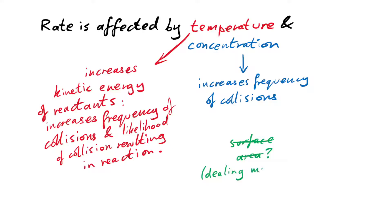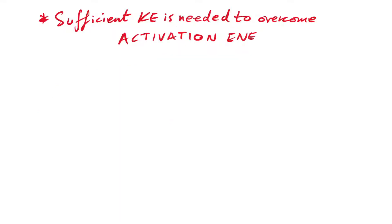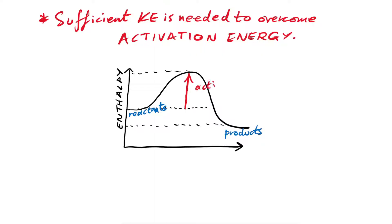We also say surface area at GCSE, but we don't really talk about that because we deal mostly with solutions and gases. Now, again from GCSE, you should remember that we have activation energy in a reaction. Particles need to get over this hump in order for the reaction to happen. The more kinetic energy the particles have, the more likely they are to overcome this.